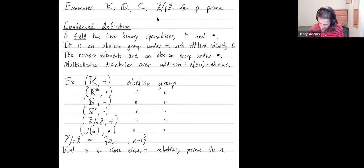So for example, Z10 is zero all the way up through 10. u10, by contrast, is just the numbers 1, 3, 7, and 9. Those numbers less than 10 that are relatively prime to n.